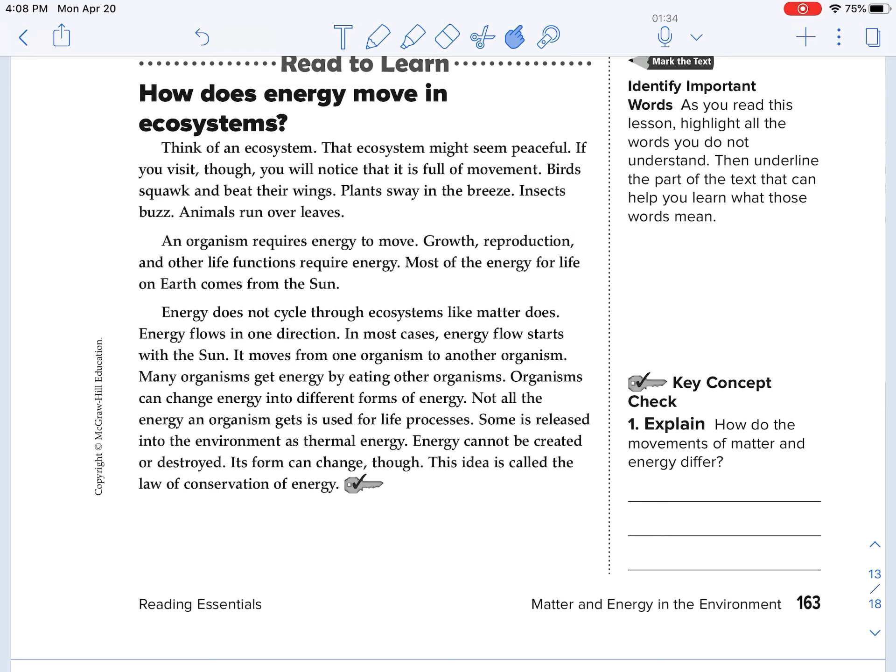All organisms require energy to move. Growth, reproduction, and other life functions require energy. Most of the energy for life on earth comes from the sun. Energy does not cycle through the ecosystem like matter does. So it doesn't go like carbon and nitrogen and hydrogen and water from the earth to the atmosphere and back down.